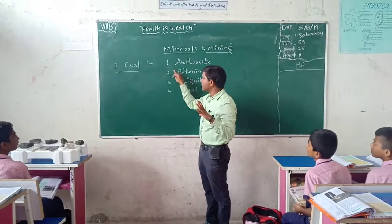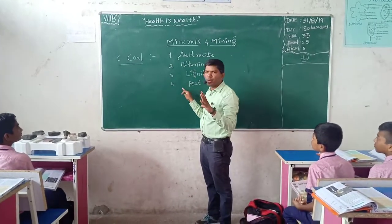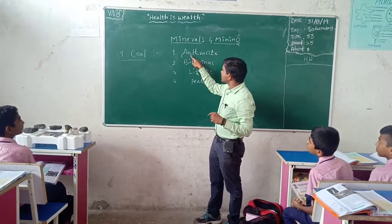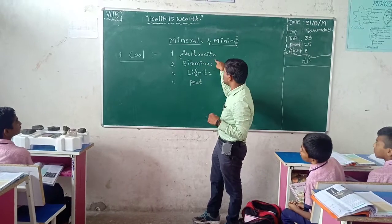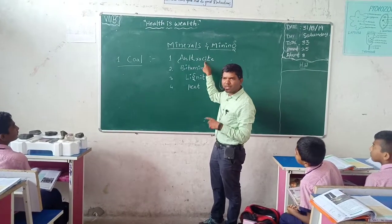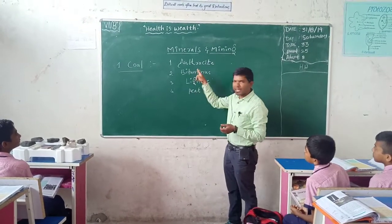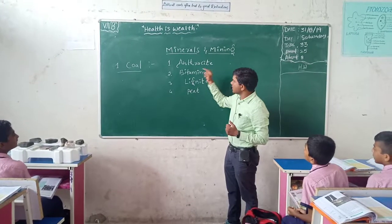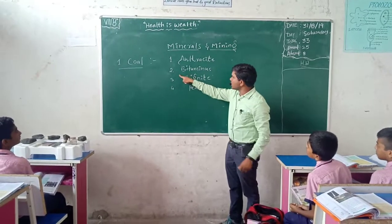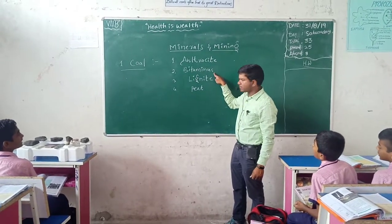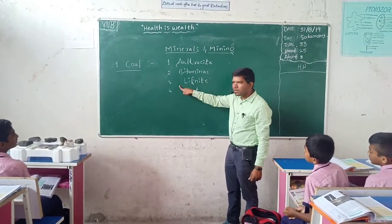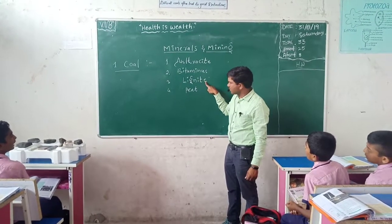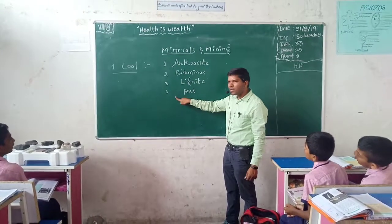There are four types of coal available. The first type is Anthracite. The second one is Bituminous. The third one is Lignite. The fourth one is Peat.